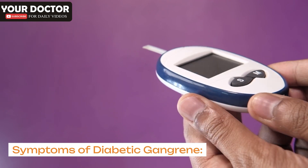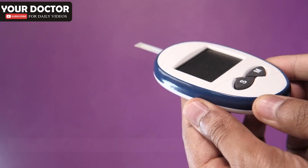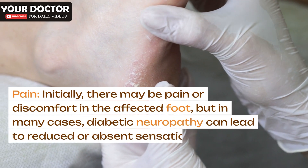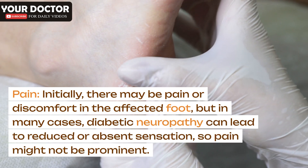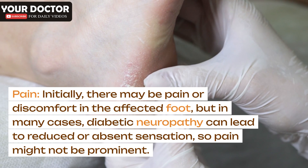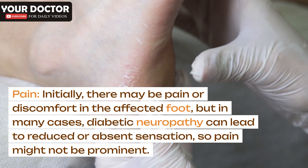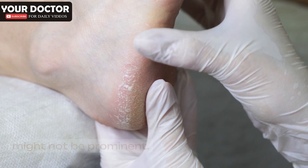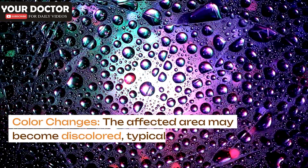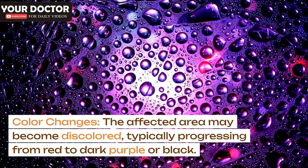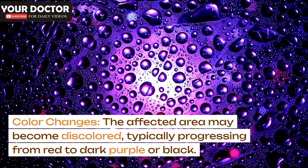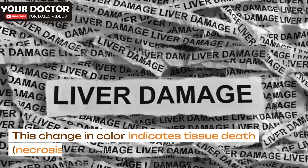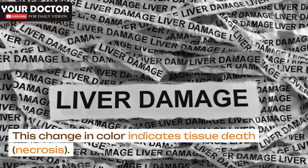Symptoms of diabetic gangrene. Pain: initially, there may be pain or discomfort in the affected foot, but in many cases, diabetic neuropathy can lead to reduced or absent sensation, so pain might not be prominent. Color changes: the affected area may become discolored, typically progressing from red to dark purple or black. This change in color indicates tissue death, necrosis.